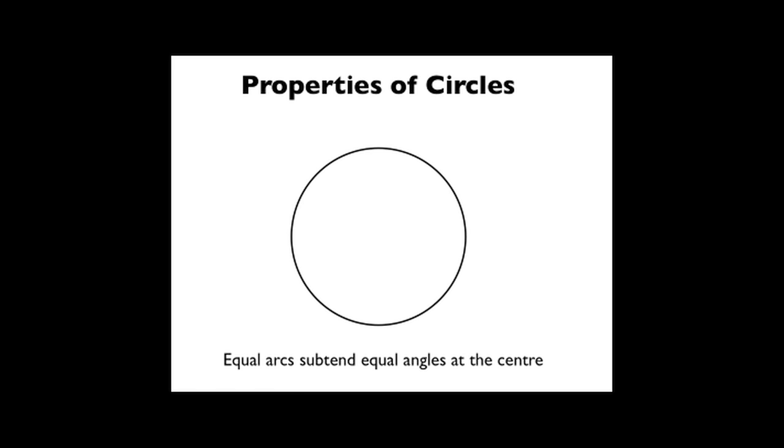There's a property that equal arcs tend equal angles at the centre. So if we take two arcs that are the same length, the angles that are actually produced at the centre are the same. From that diagram you can see what that means. So there's one arc and an angle at the centre, and the same length arc produces the same angle at the centre.